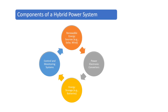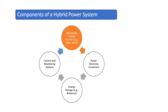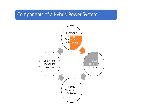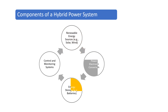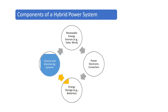Components of a Hybrid Power System include: Renewable Energy Sources (e.g., Solar, Wind), Power Electronics Converters, Energy Storage, and Control and Monitoring Systems.